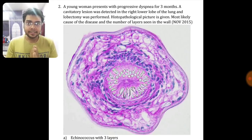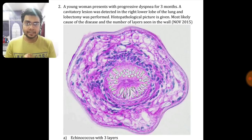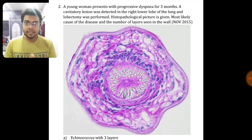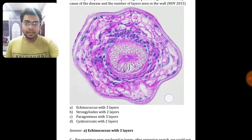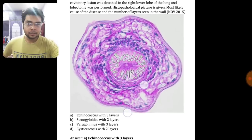Here they have given a clinical scenario: a young woman presents with progressive dyspnea for three months. A cavitary lesion was seen in the right lower lobe of her lung, meaning the parasite or its egg resides in the lung, and a lobectomy was performed. After that it was sent for histopathology. They are asking the most likely cause of disease and the number of layers seen in the wall, and they have given one picture. You should know what organism can reside in the lungs. Here you can confuse between two options: Echinococcus and Paragonimus.